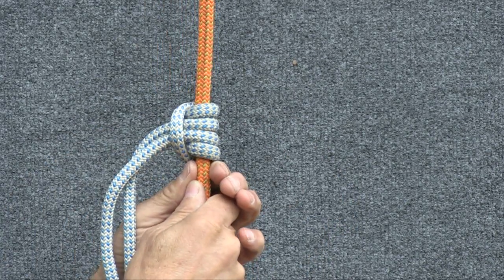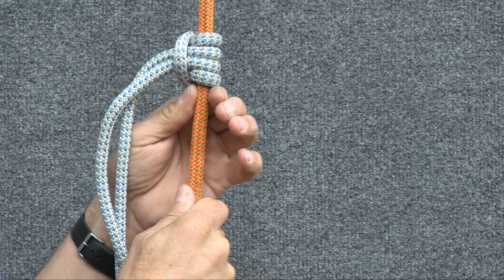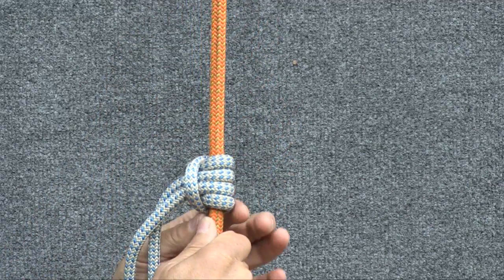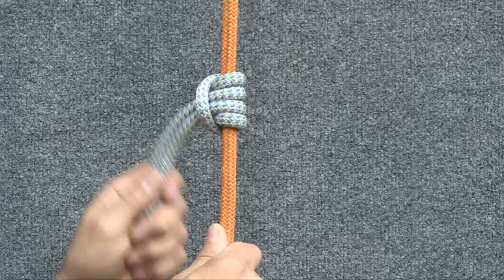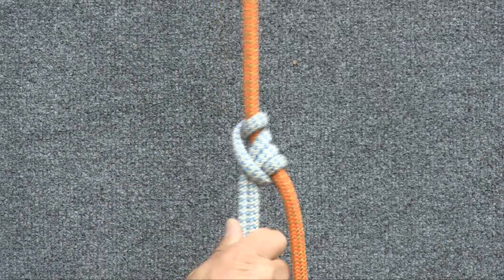This knot will slide up the rope very easily if you just push on it. If you pull down on it, it will come down. But if you pull on the tail out here, it locks tight against the rope and won't move.